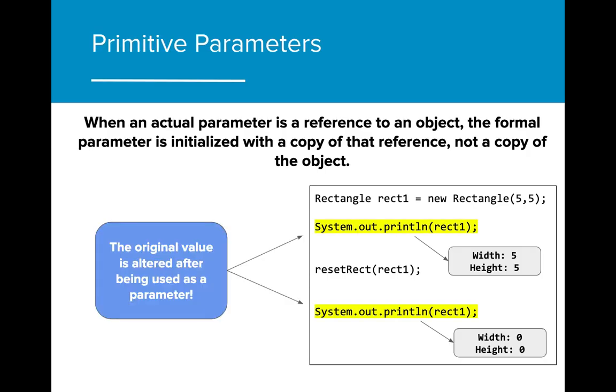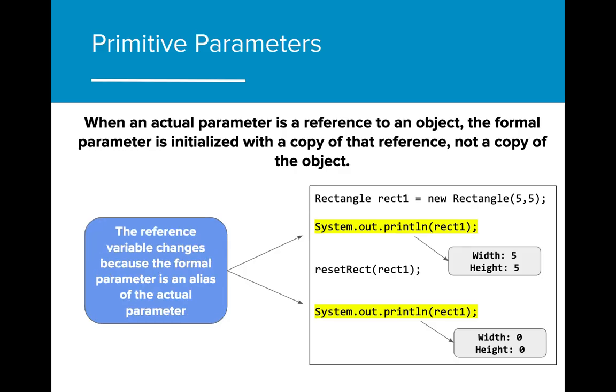As we see here, the original value of rect1 changes after rect1 is passed through resetRect. This is because the formal parameter rect in the method resetRect is a copy of the existing reference, making it an alias of the actual parameter that is being passed.